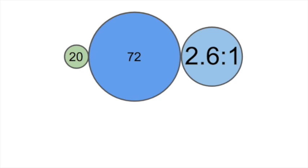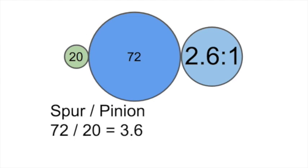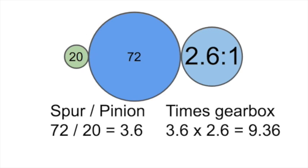Let's look at how we figure out what ratio we actually have. Let's say we have a 20-tooth pinion gear, a 72-tooth spur gear, and a 2.6-to-1 gearbox. To figure out our actual gearing — sometimes called the final drive ratio — we take the spur gear's teeth divided by the pinion's: 72 divided by 20 is 3.6. We multiply that times the gearbox ratio: 3.6 times 2.6 is 9.36. So our final drive ratio is 9.36-to-1, or we could round it to 9.4-to-1.